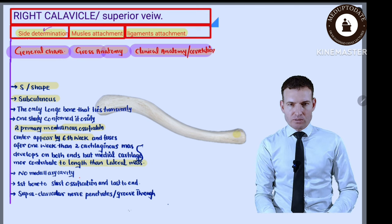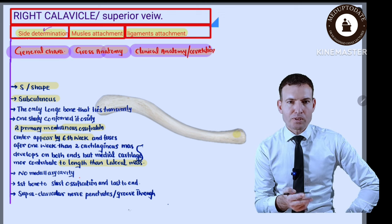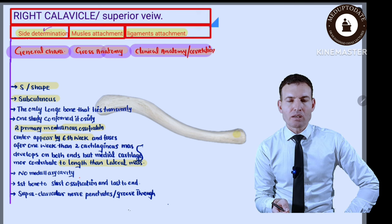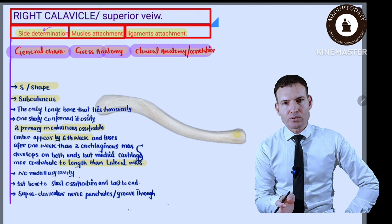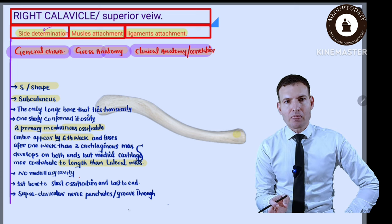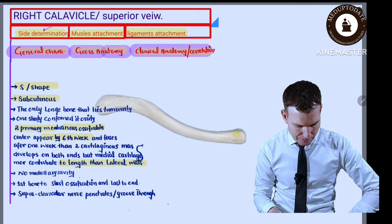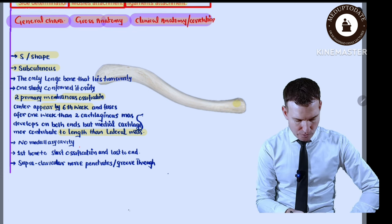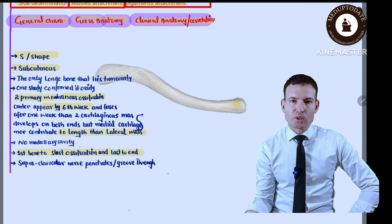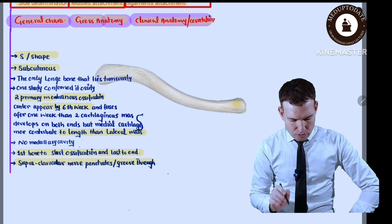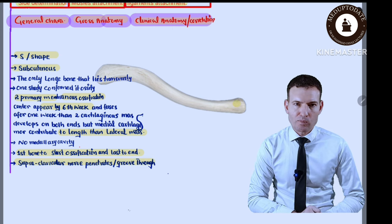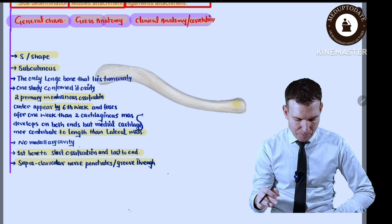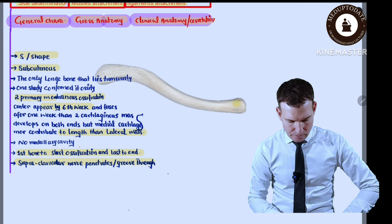According to this study, two primary cartilaginous centers appear at six weeks of age, then disappear after one week, and two cartilaginous masses appear at both ends. The medial end cartilaginous mass contributes more to the growth of the clavicle than the lateral mass. It has no medullary cavity according to some anatomists. It is the first bone to start ossification and the last to end. The supraclavicular nerve penetrates through a canal in it in some populations, and in others it grooves over the clavicle and passes through.